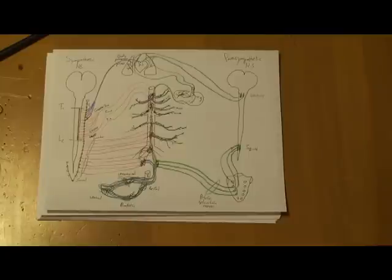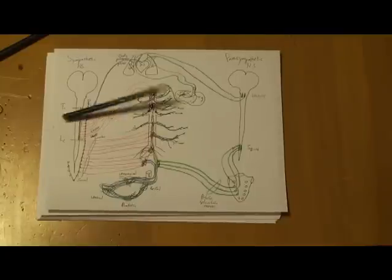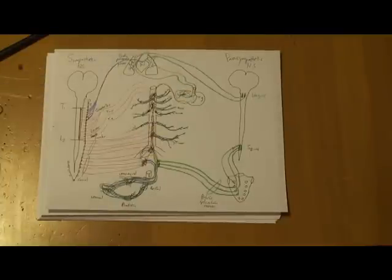That ends our summary of the sympathetic and parasympathetic nervous system with a quick discussion of visceral sensory and the pathways that those take to get back to the central nervous system.